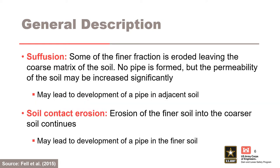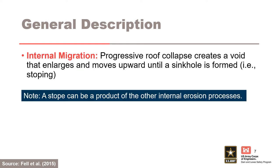For suffusion, some of the finer fraction is eroded, leaving the coarse matrix of the soil. No pipe is formed, but the permeability of the soil may be increased significantly. For soil contact erosion, erosion of the finer soil into the coarser soil continues, and both internal erosion processes may lead to the development of a pipe in the adjacent soil. For internal migration or stoping, progressive roof collapse creates a void that enlarges and moves upward in the embankment until a sinkhole is formed. A stope can be a product of the other internal erosion processes as well.